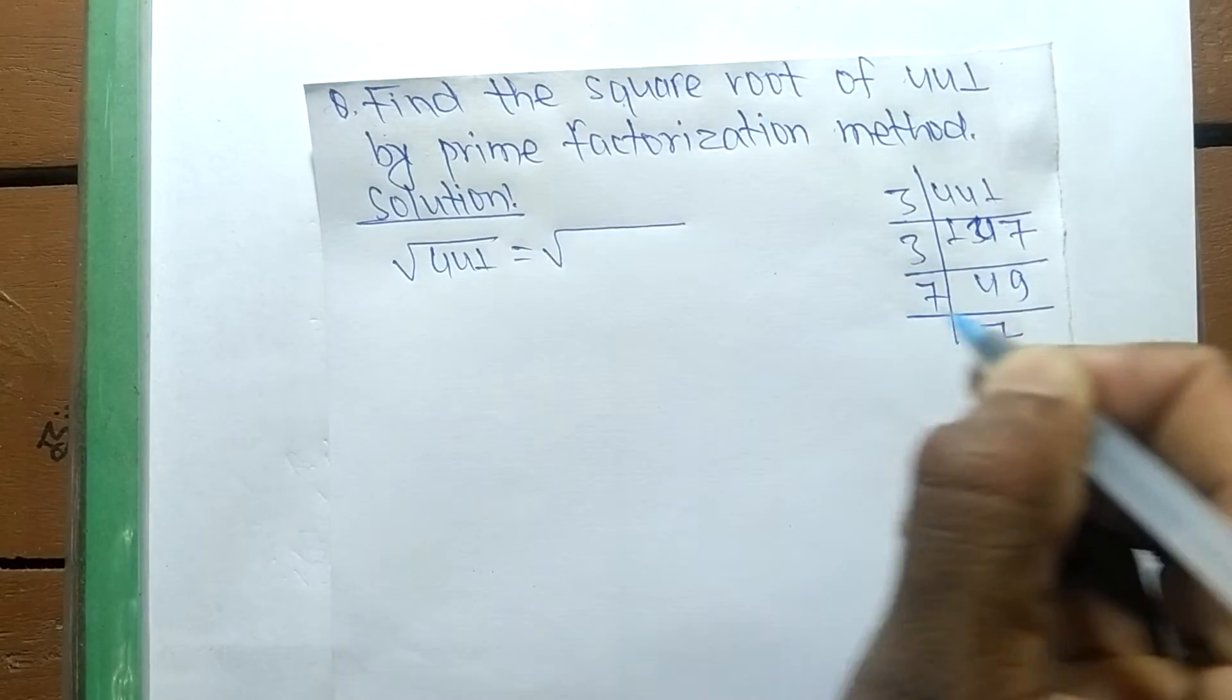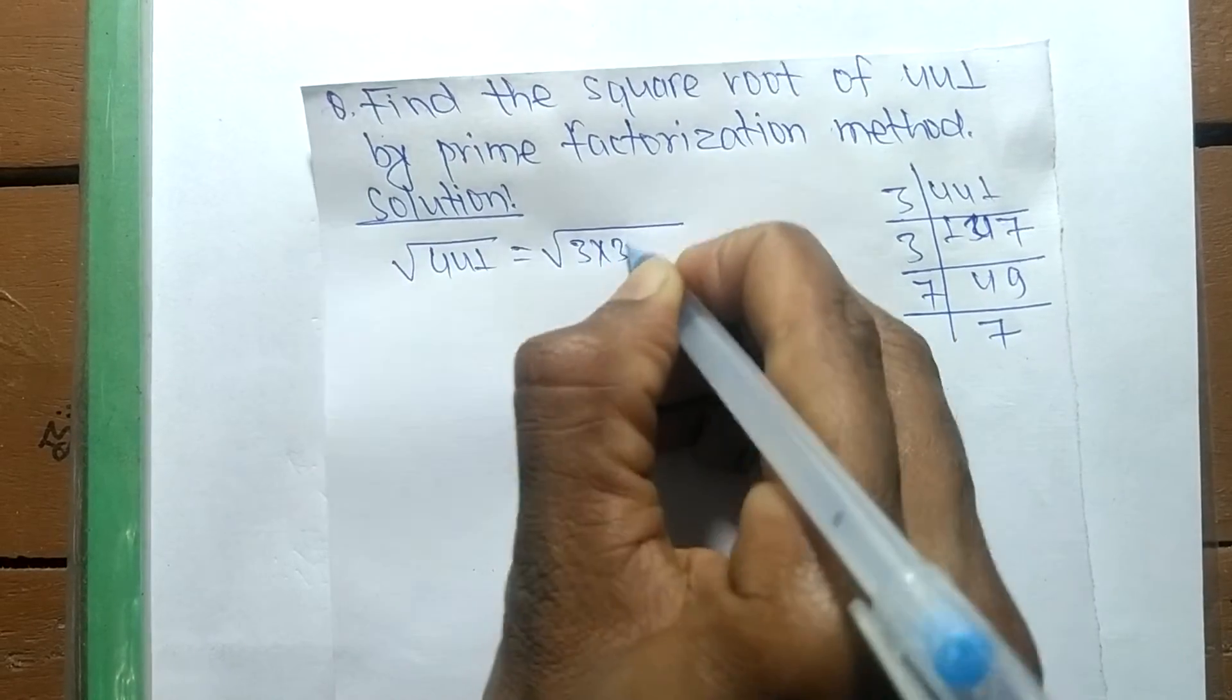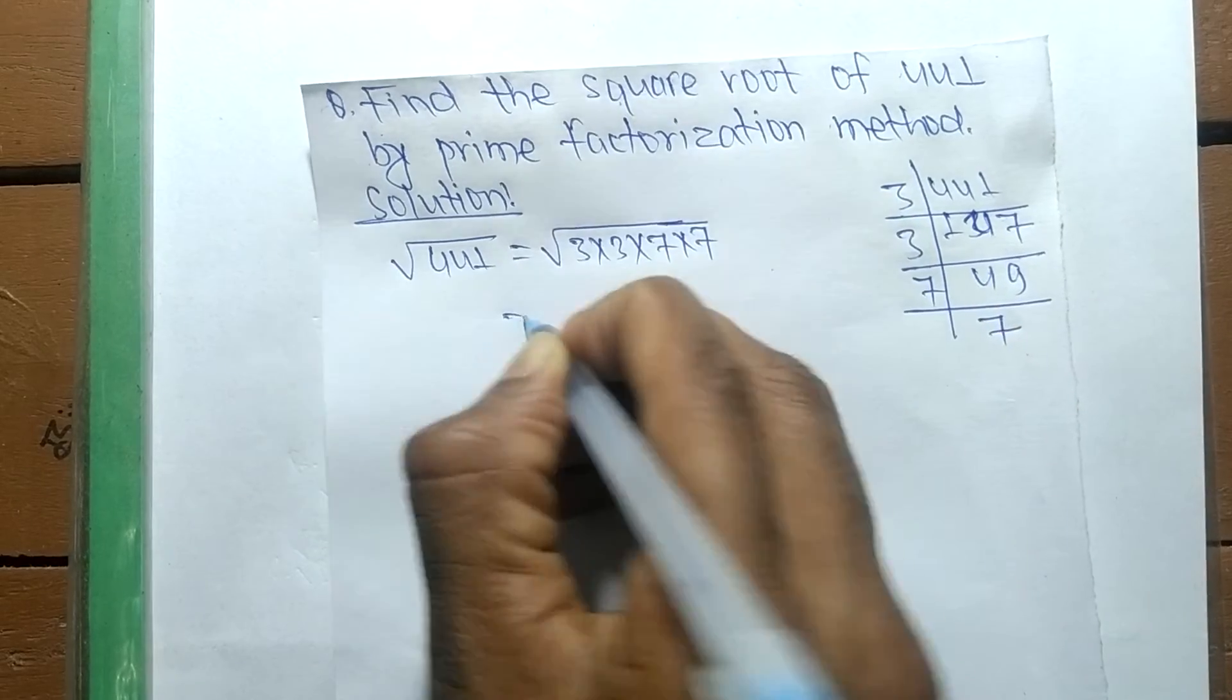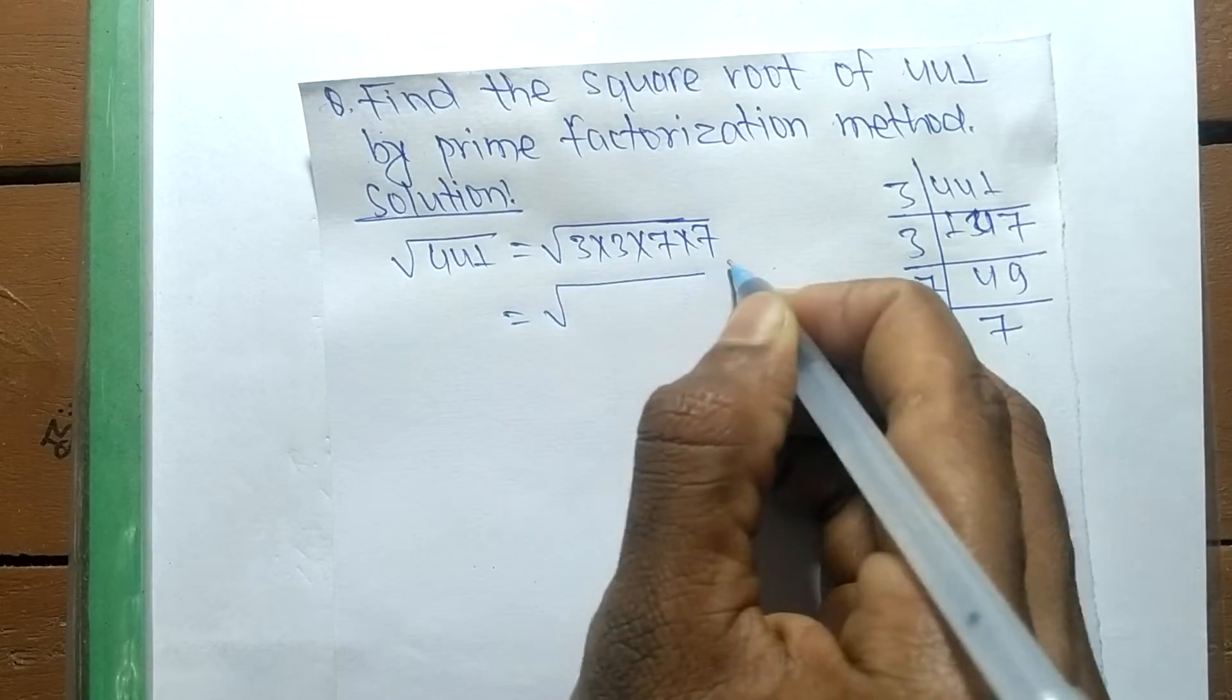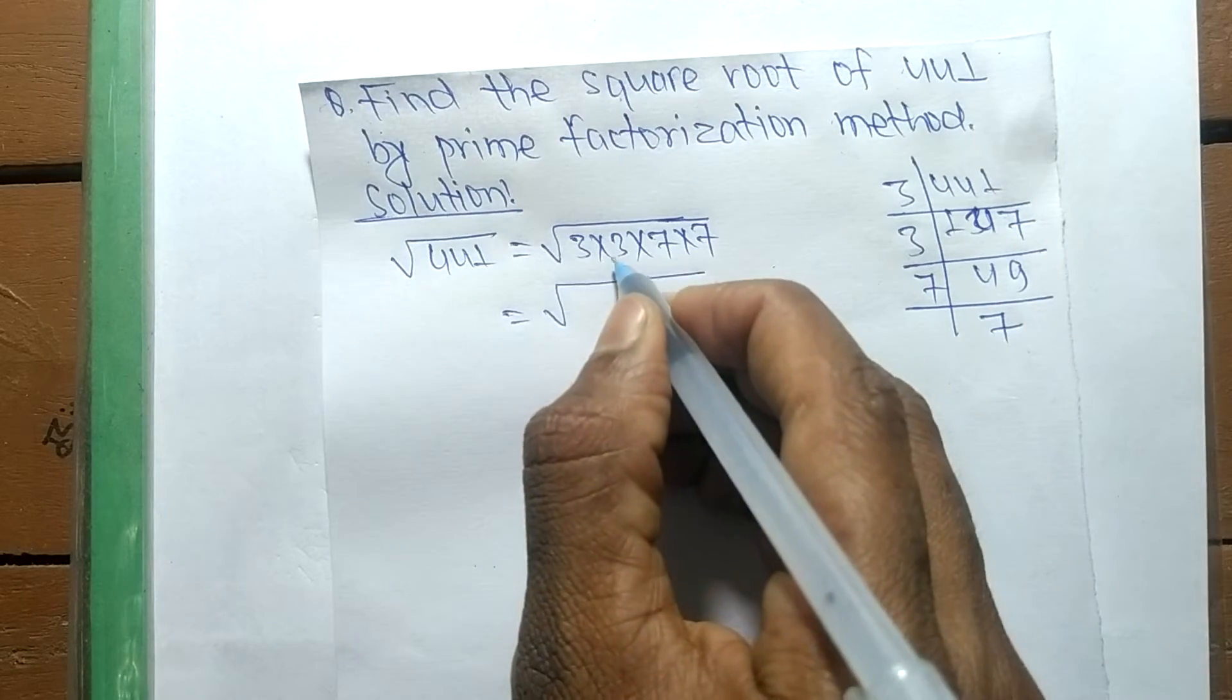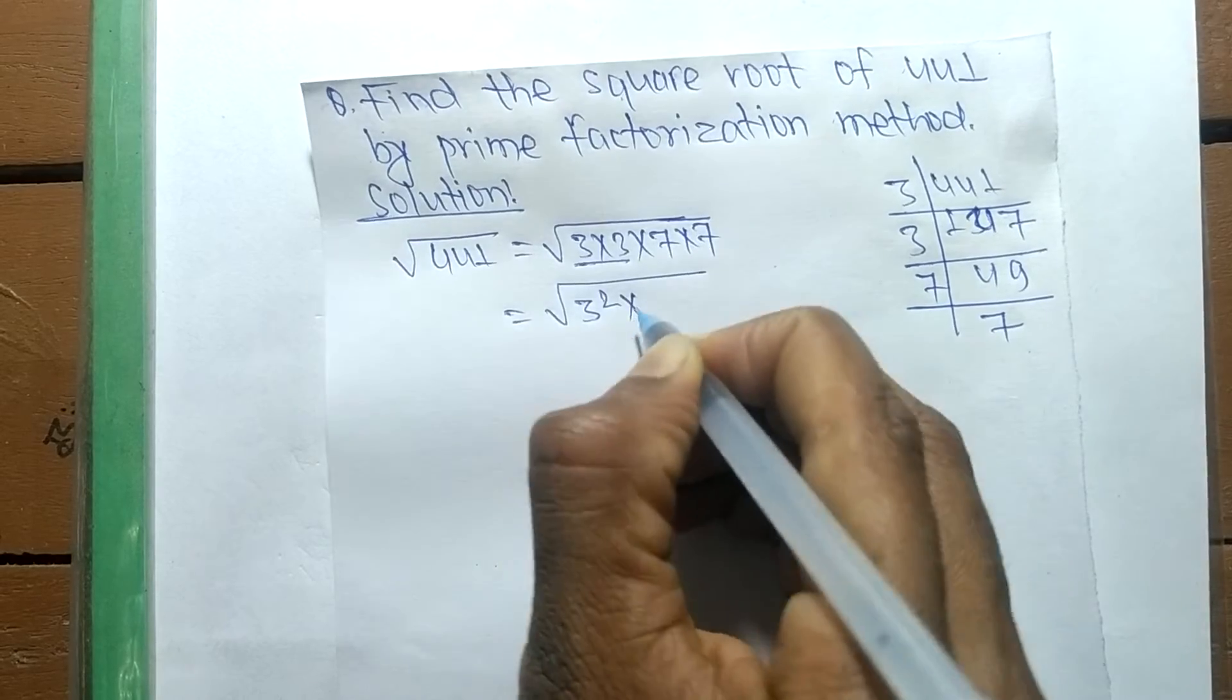From these prime factors, we can write 3 times 3 and 7 times 7. After writing the prime factors, now we make the square of all these numbers, so 3 into 3 is 3 squared.